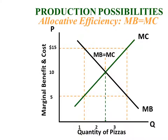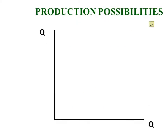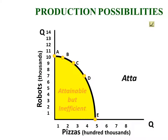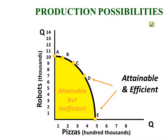Two units is allocatively efficient for pizza. Let's bring our graph back up and talk about what point that is on the curve — it happens to be point C. If we're producing two units of pizzas, anywhere on the curve we're achieving full employment and maximizing our productive capacity. So if we use just enough resources to produce two units of pizzas, there will be exactly enough resources left over to produce seven units of robots — seven units of capital goods. Therefore, we end up at point C, which for this society is allocatively efficient.